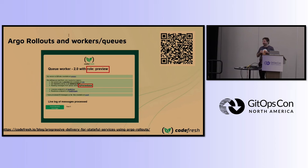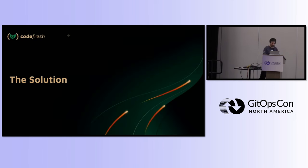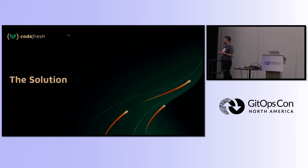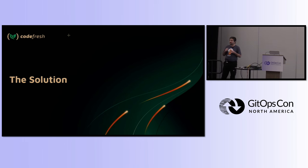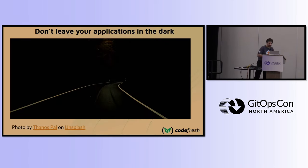I wrote a blog post with a solution for this particular problem — how to use Argo Rollouts with workers and queues. Then I thought: instead of answering each edge case one by one, let's try to give a generic solution that works in all cases where people have adopted microservices. That's what this presentation is about.